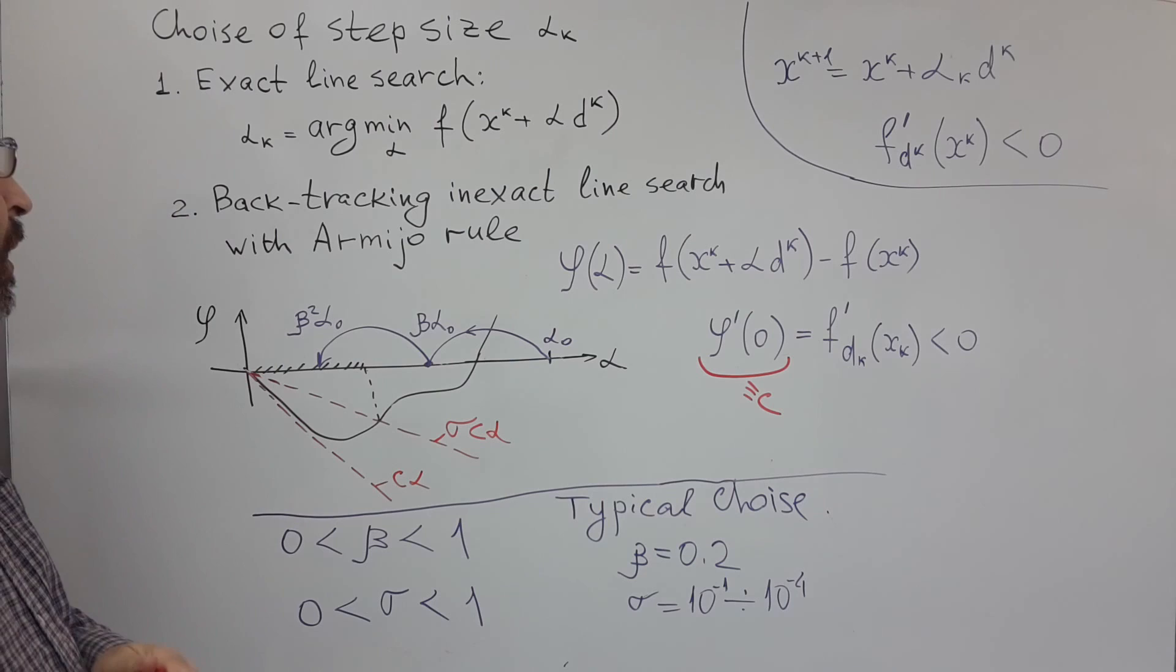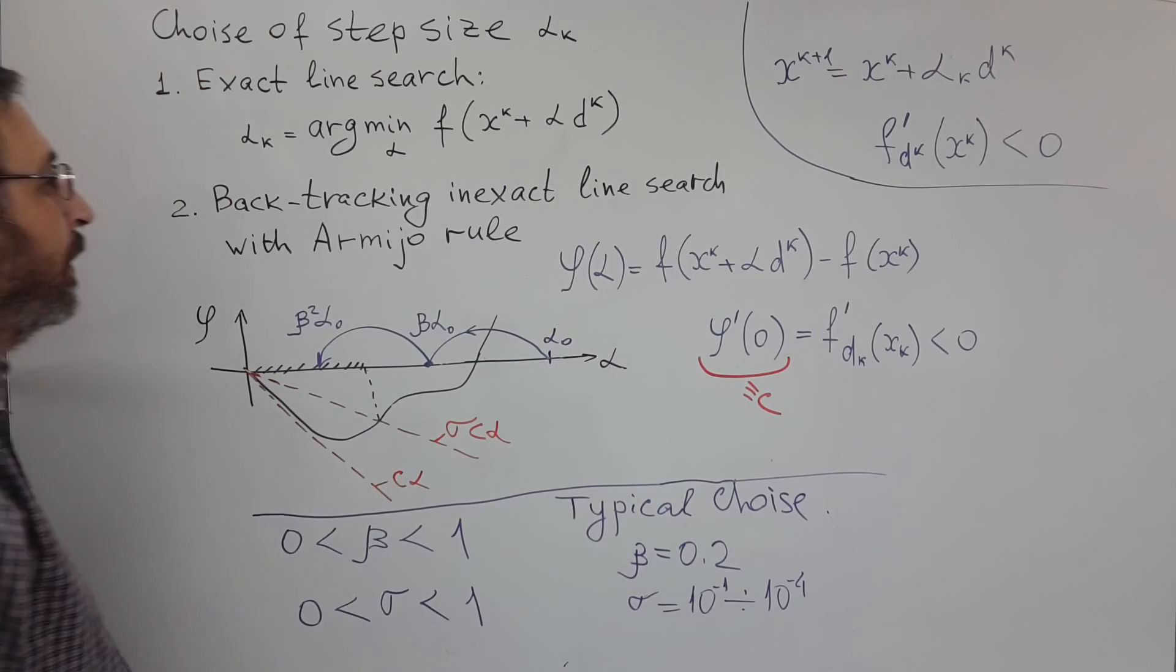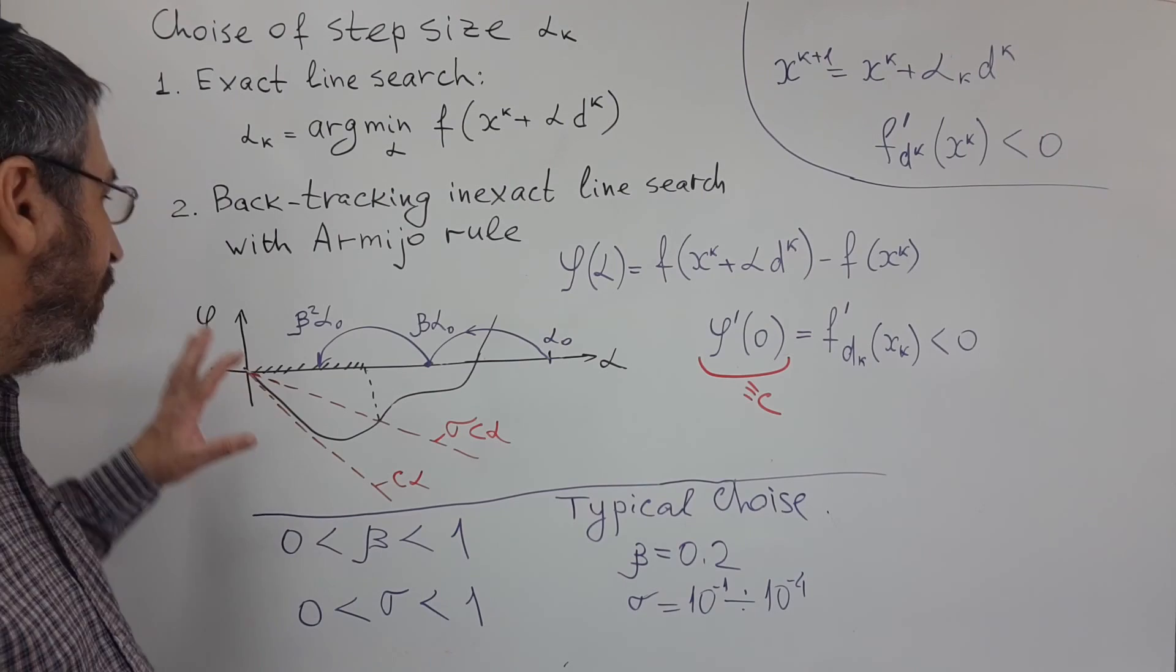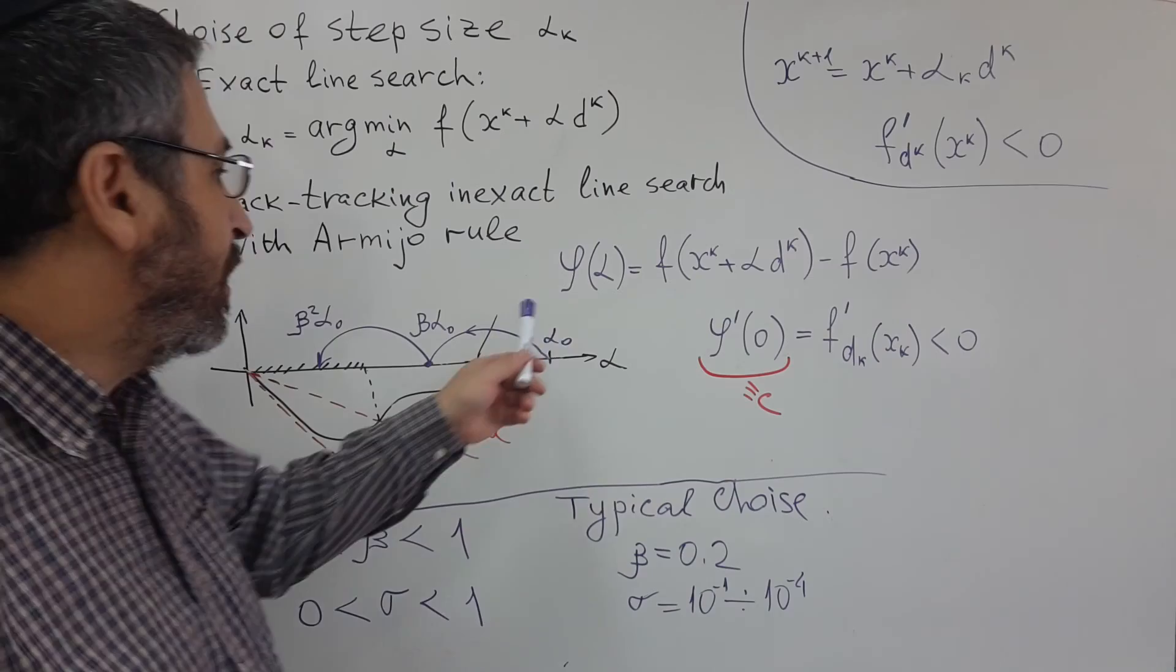In many cases, compromise would be achieved with so-called inexact backtracking, inexact line-search, with Armijo stopping criterion. In order to describe this approach, we will use an auxiliary function.